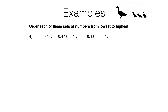In question 4 we'll do the same as usual — we'll look for the biggest place value column, which is the units for all of these. There's only one that's got anything bigger than zero and that's 4.7, so straight away we can say that's our biggest number and put that on the end. Now all the other numbers are 0.something, so we have to look at the next place value column along to tell them apart. We've got a 4, a 4, a 4 and a 4 — they are all 0.4 something — so we still can't tell them apart. We've got to go to the next place value column along, which is the hundredths column, which I'm going to underline now.